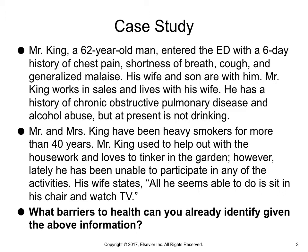Mr. King works in sales and lives with his wife. He has a history of chronic obstructive pulmonary disease and alcohol abuse, but at present is not drinking. Mr. and Mrs. King have both been heavy smokers for more than 40 years. Mr. King used to help with housework and loves to tinker in the garden; however, lately he has been unable to participate in any of those activities. His wife states all he seems able to do is sit in his chair and watch TV. What barriers to health can you already identify given the above information?